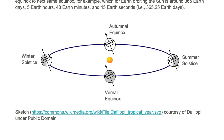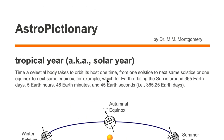Now you don't have to start at a solstice — you can start at an equinox. For example, we could start at a vernal equinox. The time the Earth takes to go from one vernal equinox, around the Sun, one full orbit, to the very next vernal equinox, is one tropical year, otherwise known as a solar year.